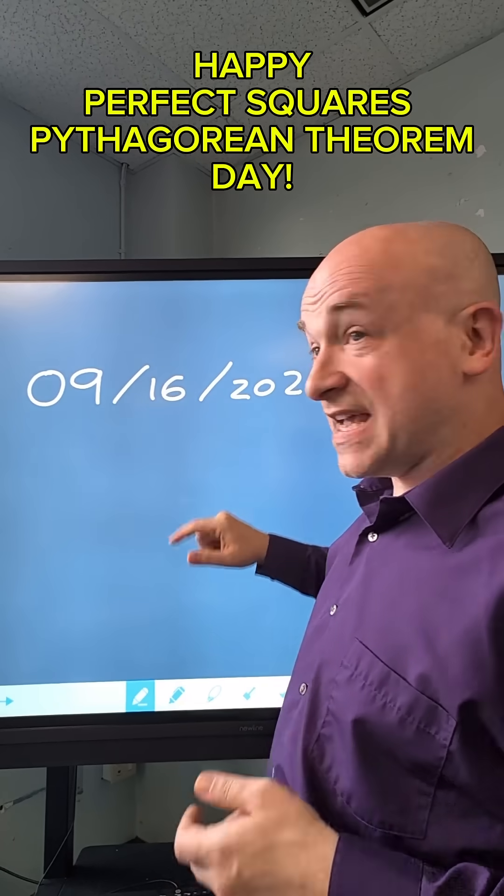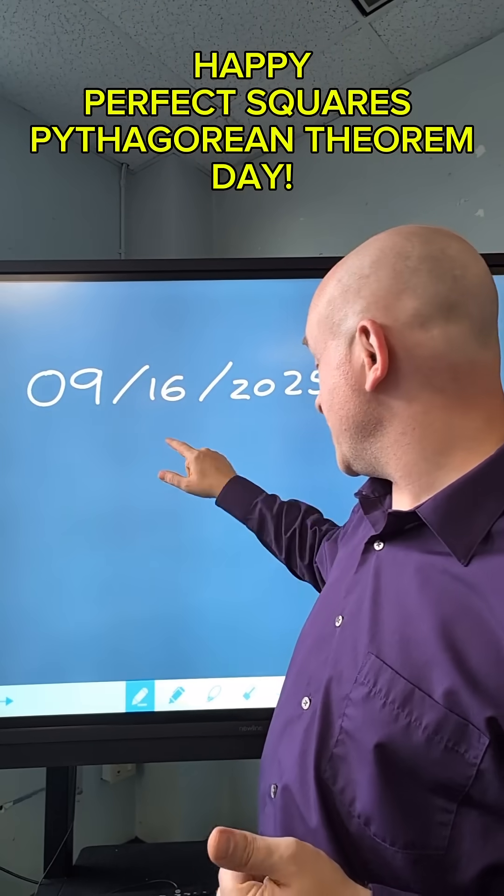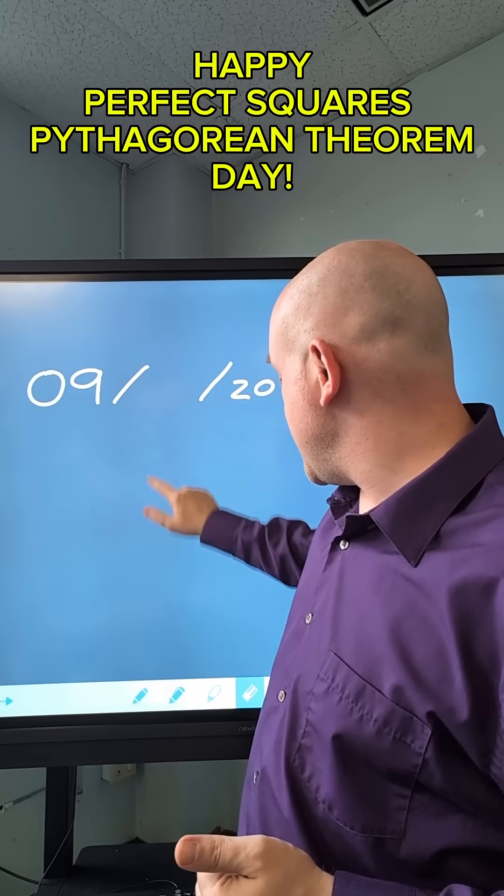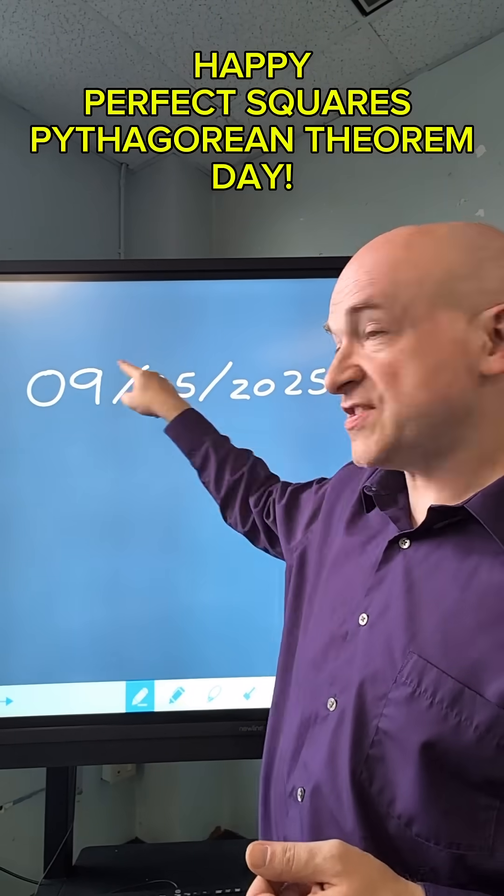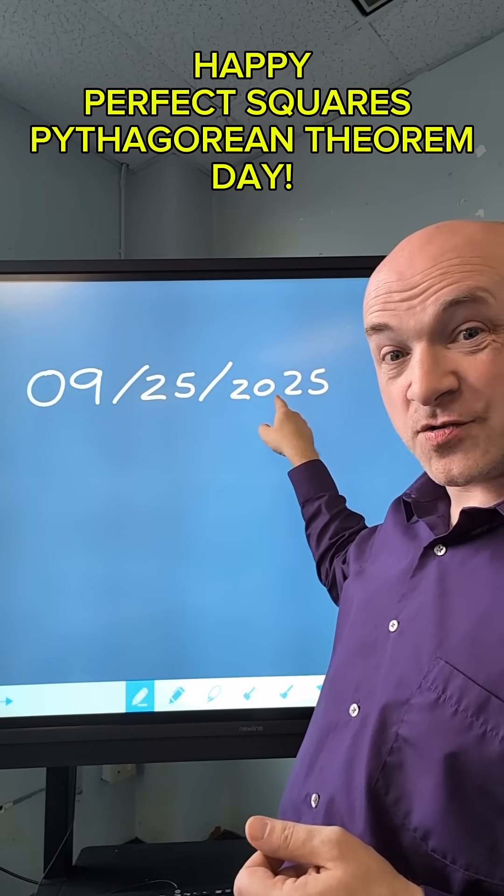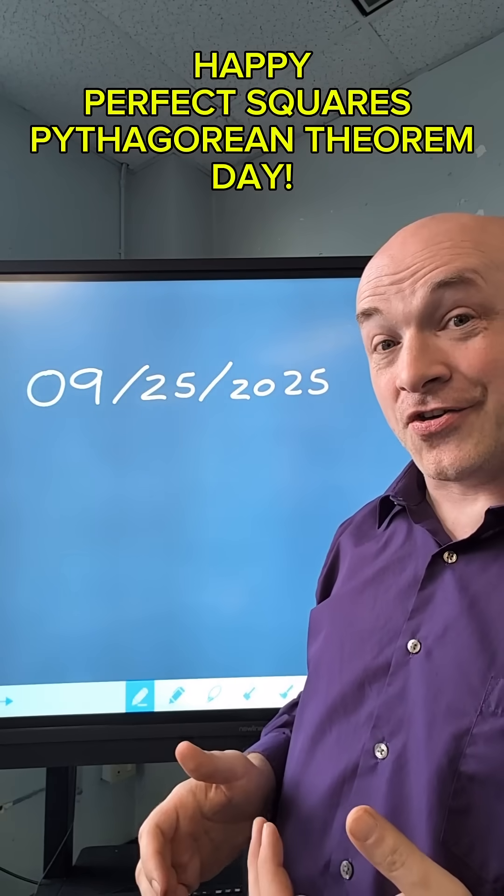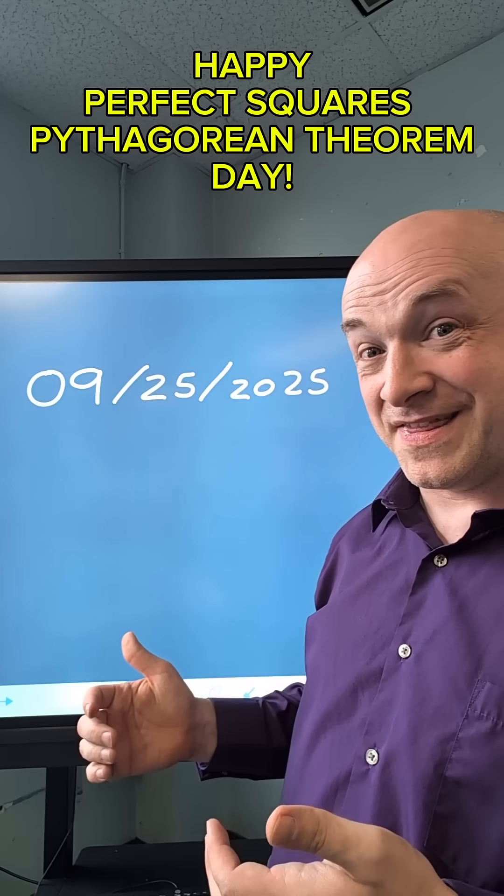the next Perfect Squares Day, the last one that's really going to exist, is going to be next Thursday on September 25th. 3 squared, 5 squared, and 45 squared. If you want to see another Perfect Squares Day beyond this one...